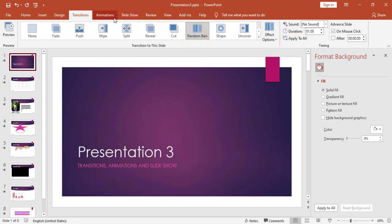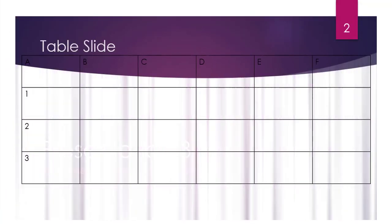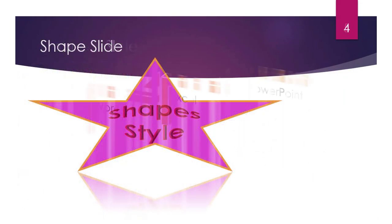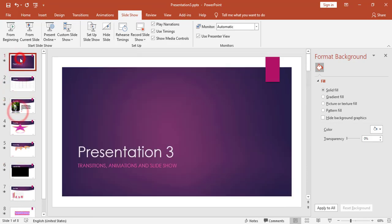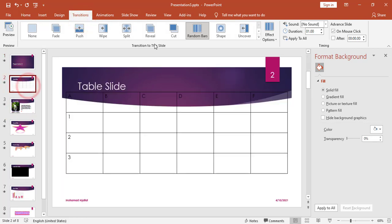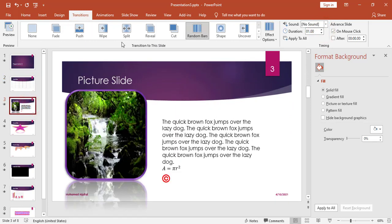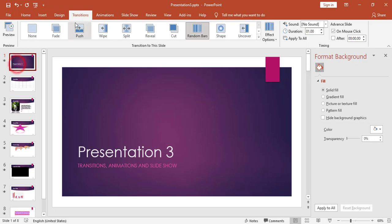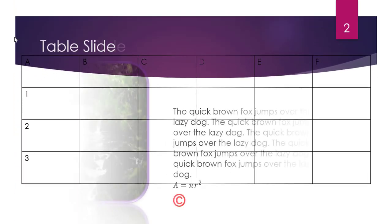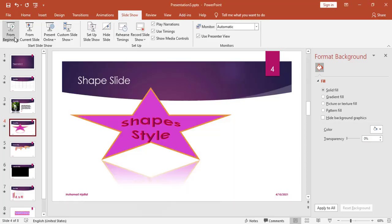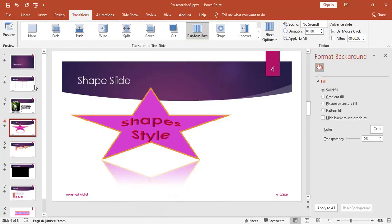Now if I go to Slideshow from Beginning, you can see the Random Bar transition has been applied. I can also customize transitions per slide — for slide number two I will add a Push with a duration of two seconds, and for slide number three I will add a Split with a duration of three seconds. Running the slideshow shows each slide uses its own different transition effect.